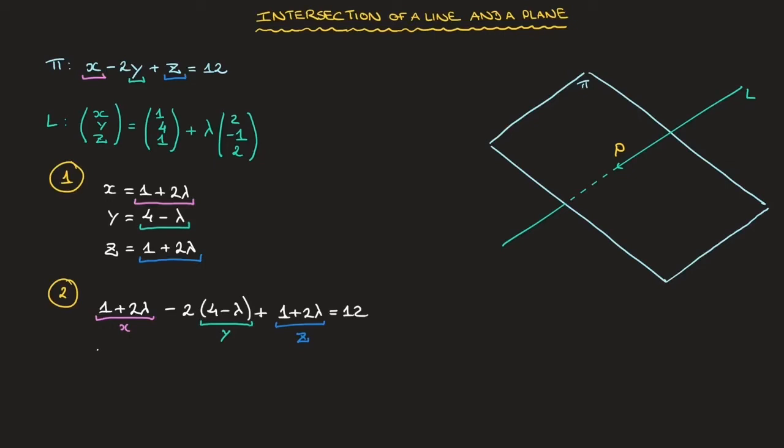So let's go ahead. On the left-hand side, we have 1 plus 2 lambda minus 2 times 4, which is 8, plus 2 lambda, plus 1 plus 2 lambda, and that equals 12. We now gather like terms on the left-hand side. So we have 2 lambda plus 2 lambda plus 2 lambda, that's 6 lambda. And we have 1 minus 8, which is negative 7, plus 1, so that's negative 6, and that equals 12.